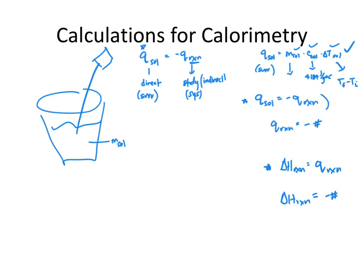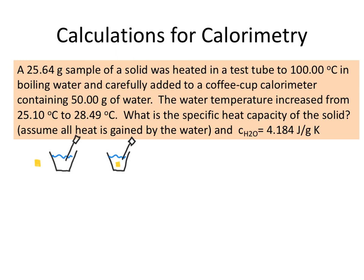Let's do a calorimetry problem. We have a 25.64 gram sample of a solid heated to 100°C, placed into a coffee cup calorimeter containing 50 grams of water. The initial water temperature was 25.10°C, and after adding the solid it increased to 28.49°C. We need to use the change in the water's temperature to figure out the specific heat capacity of the solid.